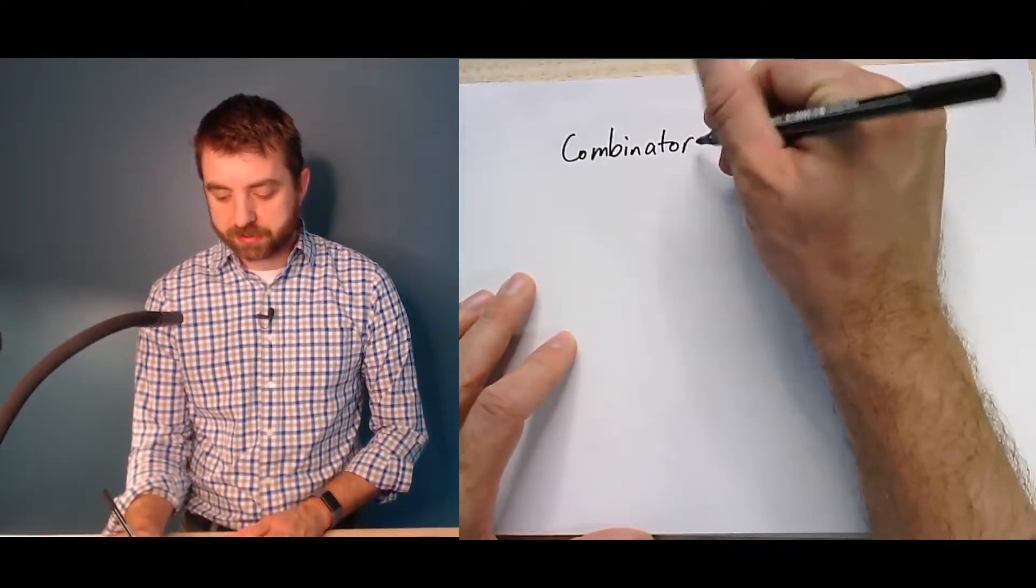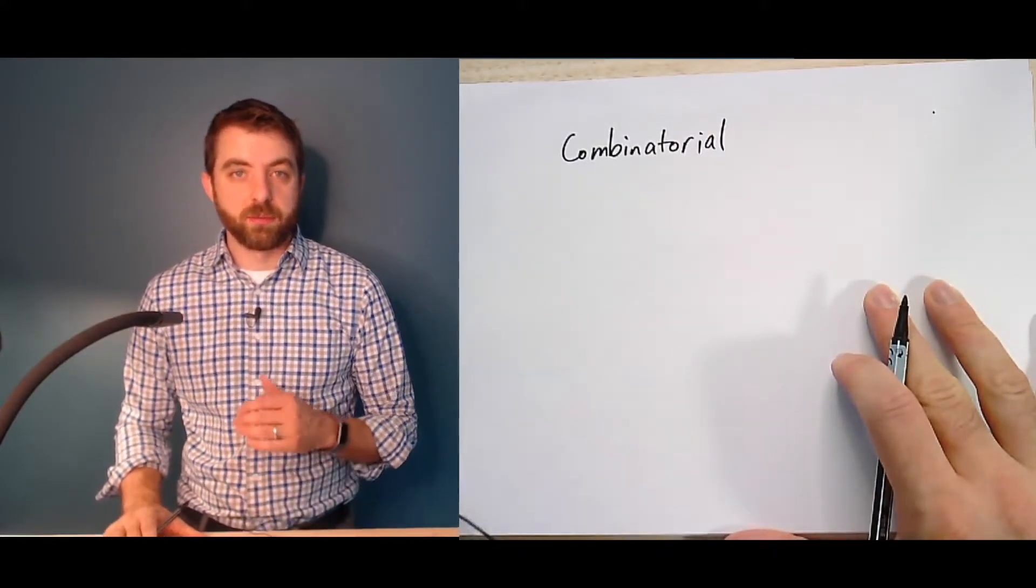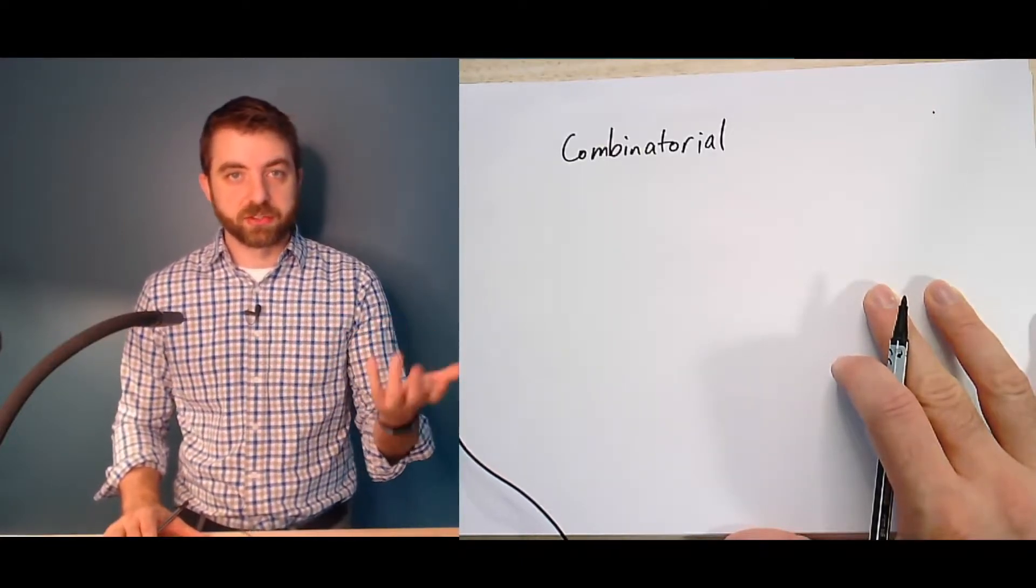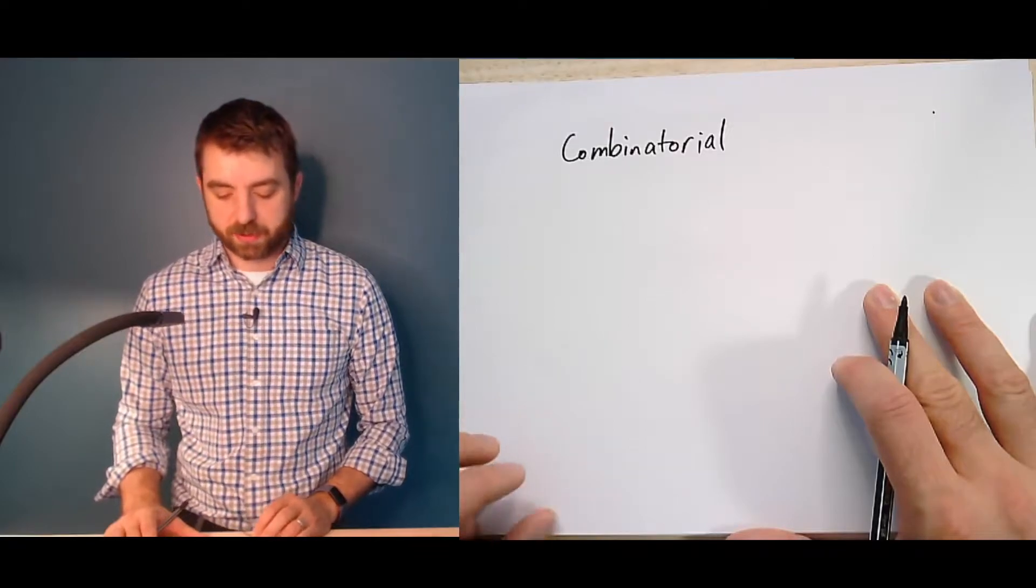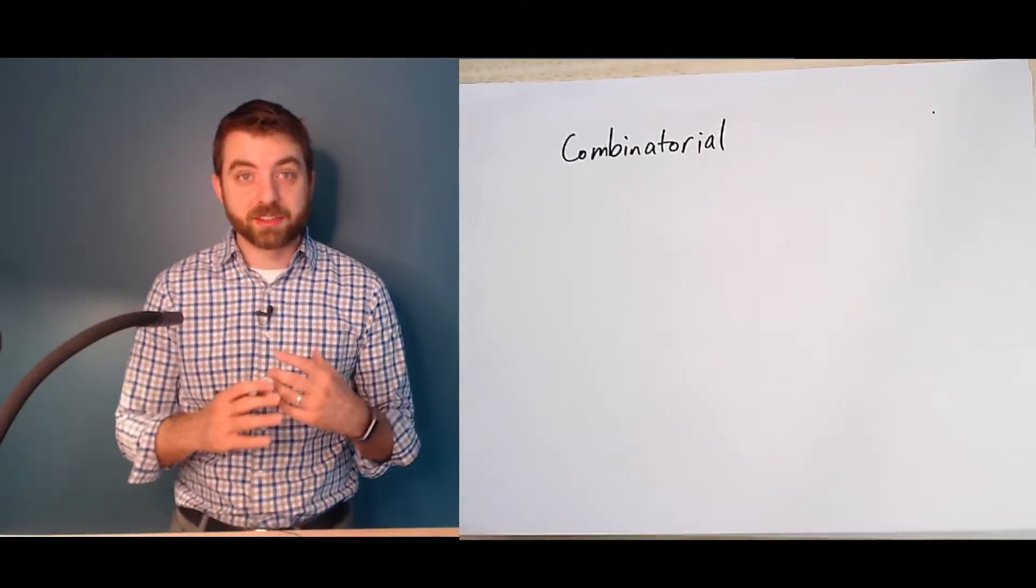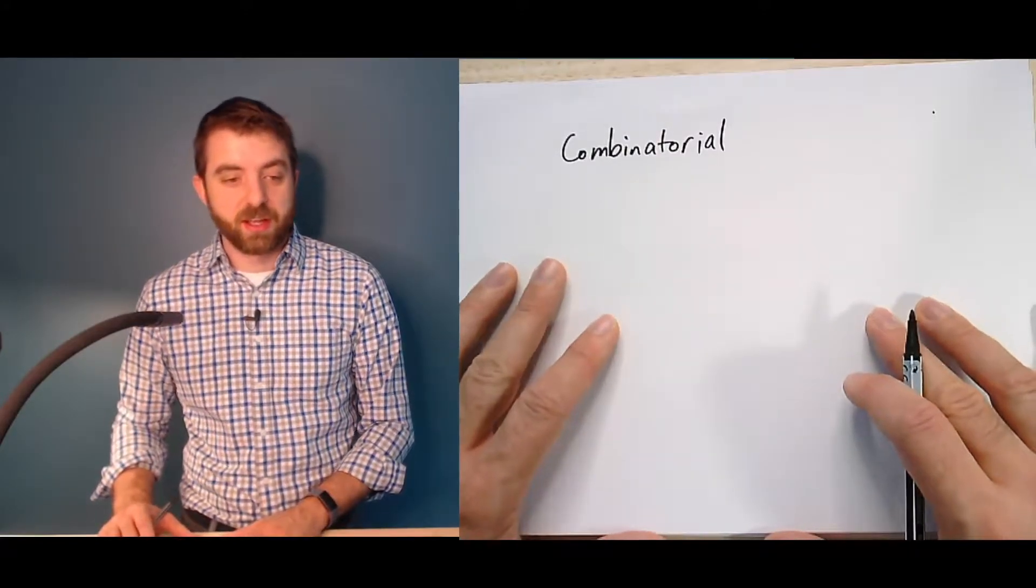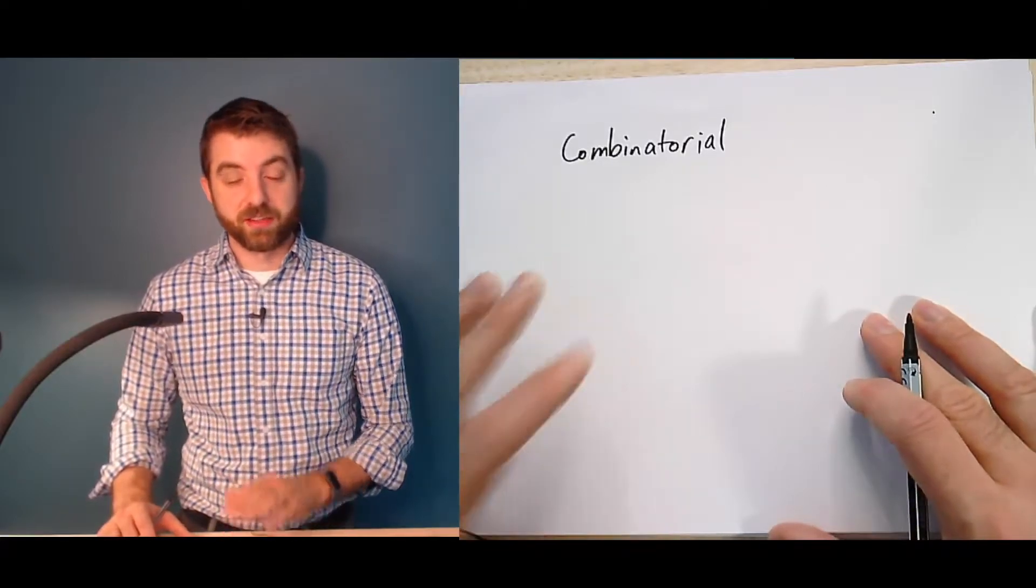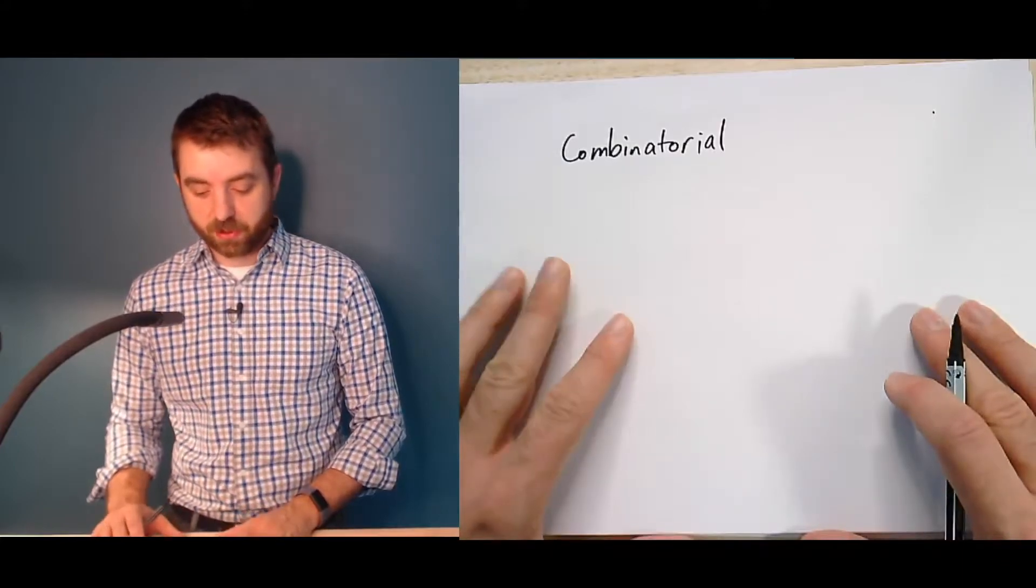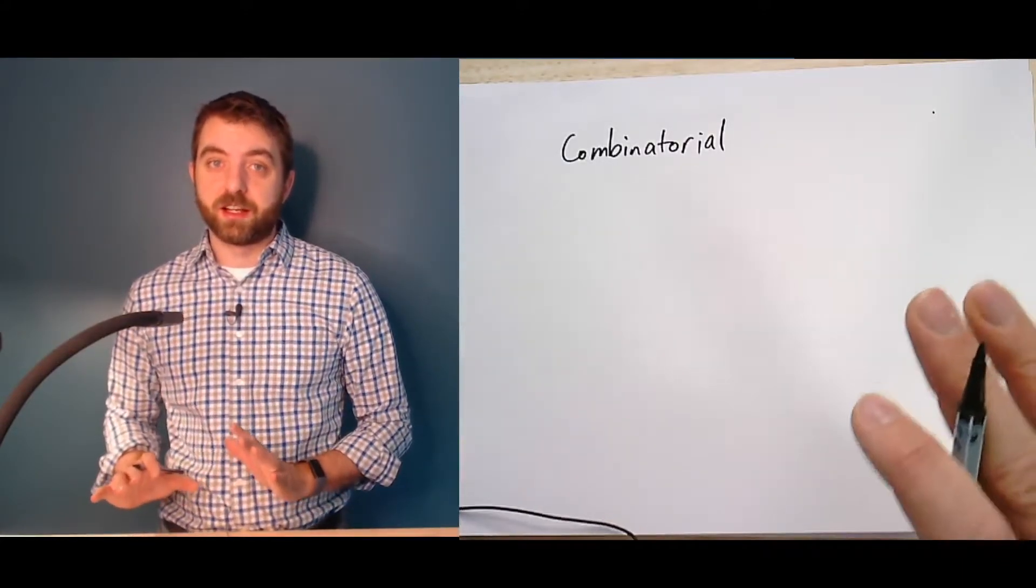And combinatorics refers to the study of objects built from finite sets, finite or discrete sets, and the kinds of ways they can come together. So when you combine things into a set, you can ask questions about how many different kinds of arrangements you have. And so those enumerative questions are enumerative combinatorics. We're not going to get into so many of those. But the starting point for most graph theory is combinatorial.